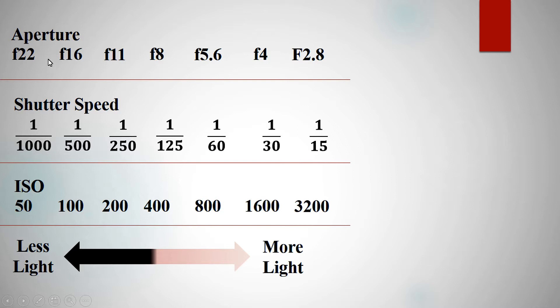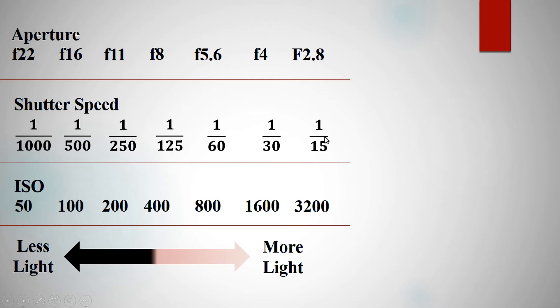This one-stop scale includes the following aperture values: F22, F16, F11, F8, F5.6, F4, F2.8. As the value increases, there is less light entering the camera. Shutter speed and ISO are also related in this low-to-high scale.